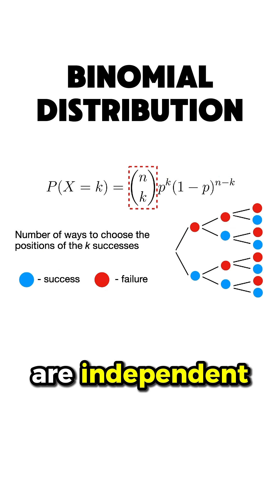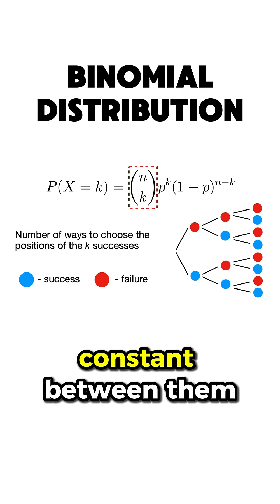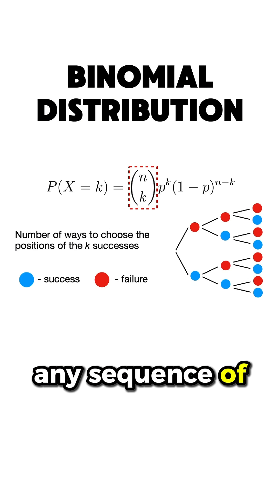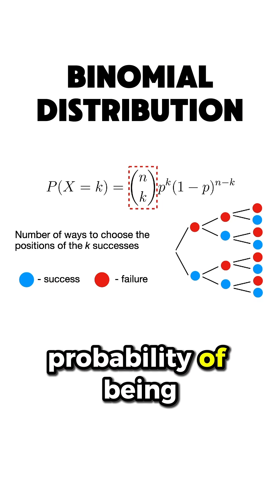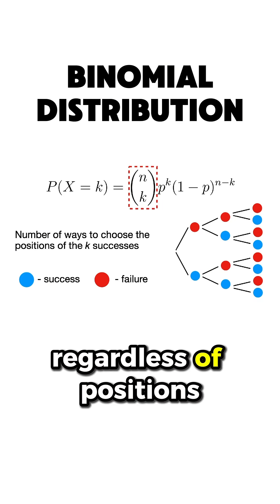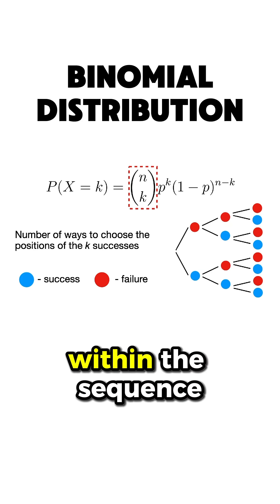Since the trials are independent, with probabilities remaining constant between them, any sequence of n trials with k successes and n minus k failures has the same probability of being achieved, regardless of positions of successes within the sequence.